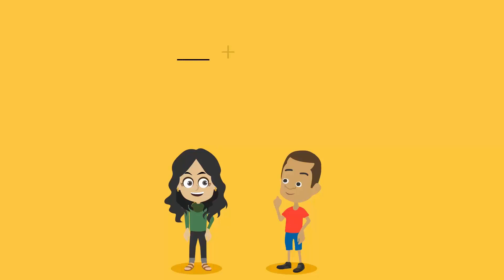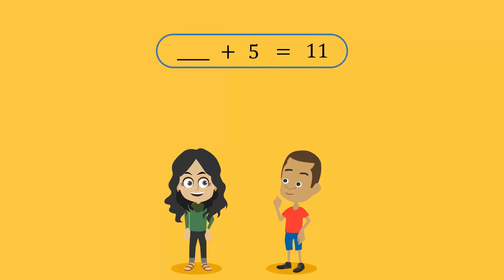Sarah asks Asif to think of a number to add to 5 which would result in 11, and asks him to solve this mentally. Asif solves the question and gets the answer 6.